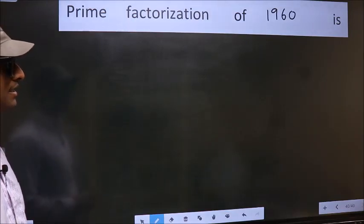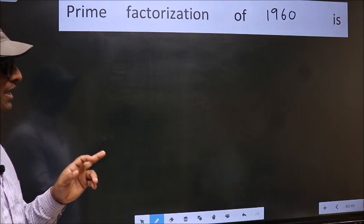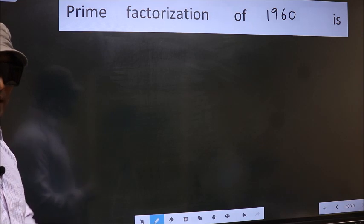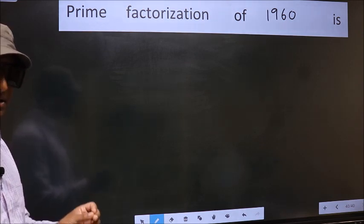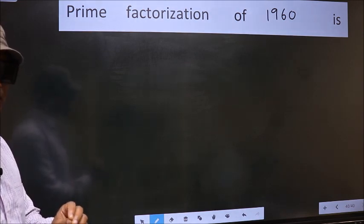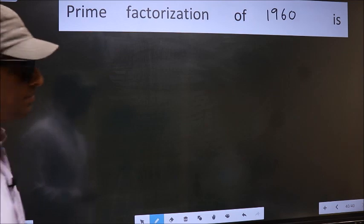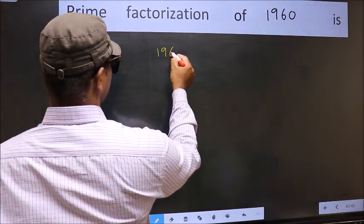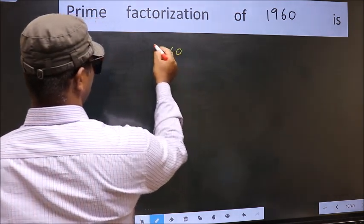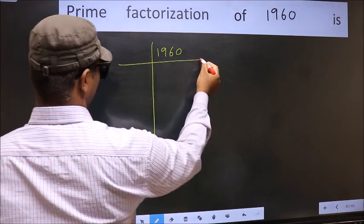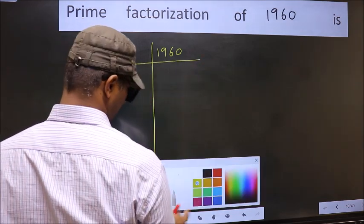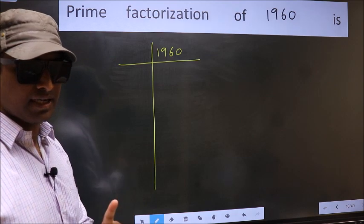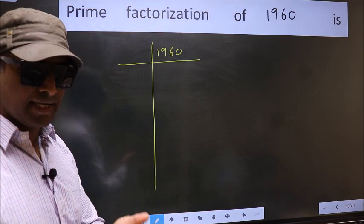Prime factorization of 1960. To do prime factorization, first we should frame it in this way. 1960 — this is your step 1.